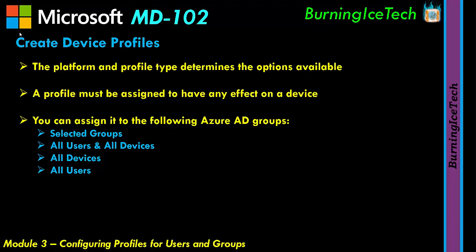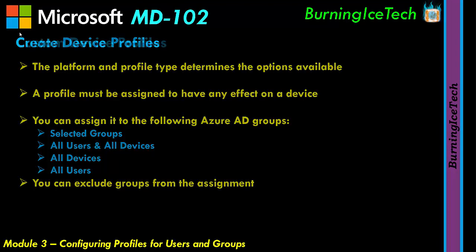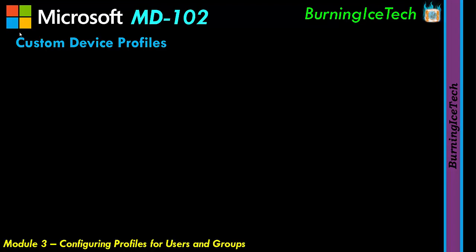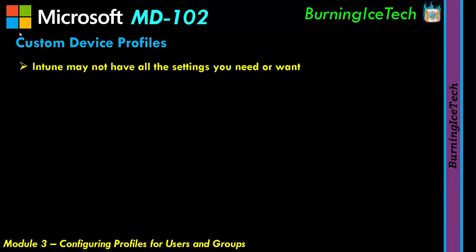You can also exclude groups from an assignment. Moving on — you also get custom device profiles. Intune may not have all the settings you need, even though it's a very powerful cloud tool. There will be times it cannot do what you want, and you might need something like Configuration Manager, formerly called Endpoint Configuration Manager, which is more of an on-premises tool.